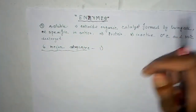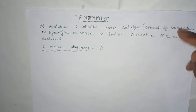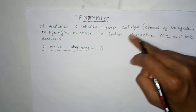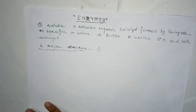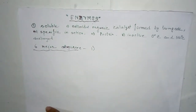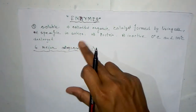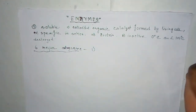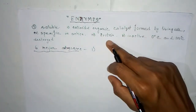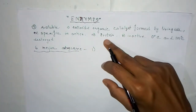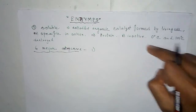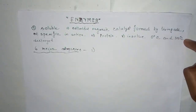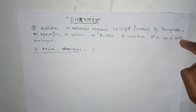They are formed by the living cells, and they are specific in action, because every enzyme does different actions. Number four, they are protein in nature, and they are inactive at 0 degrees Celsius and destroyed at 100 degrees Celsius. So these are the characteristics of enzymes.